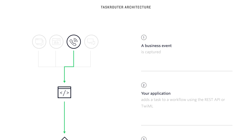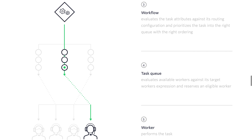For our call center, a business event will be an incoming call. Our application will add a task to the workflow using the REST API, and that will place the task into a workflow. The workflow will look at the attributes in the task and decide which task queue to place it in. Then the task queue will look at its available workers and decide which worker will perform the task.